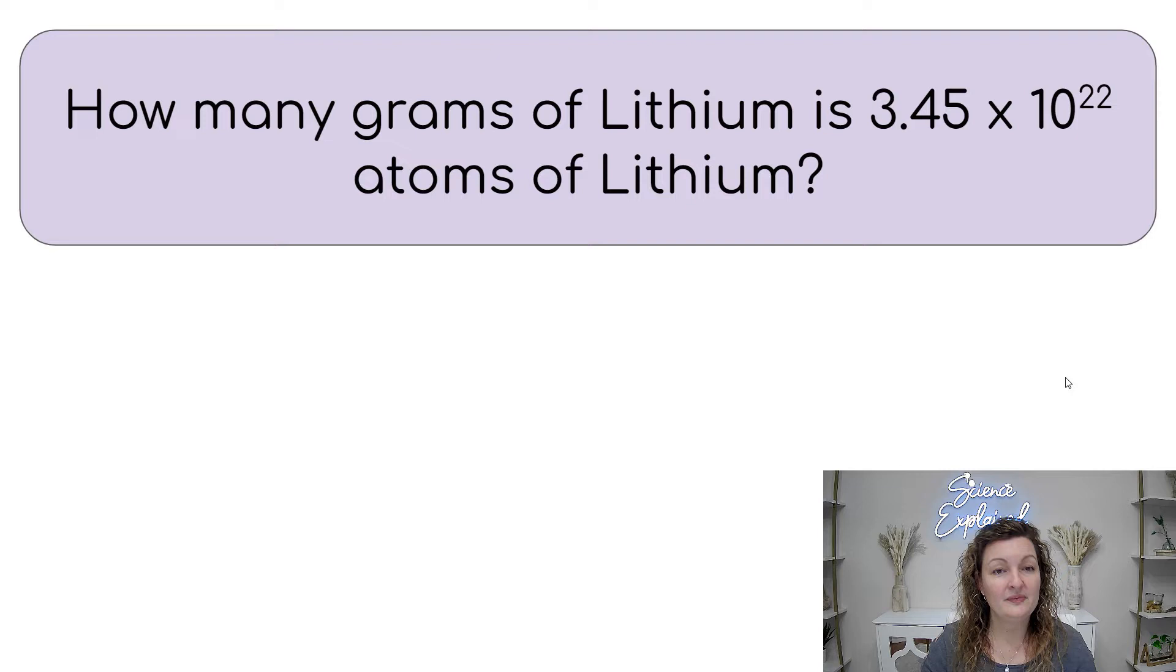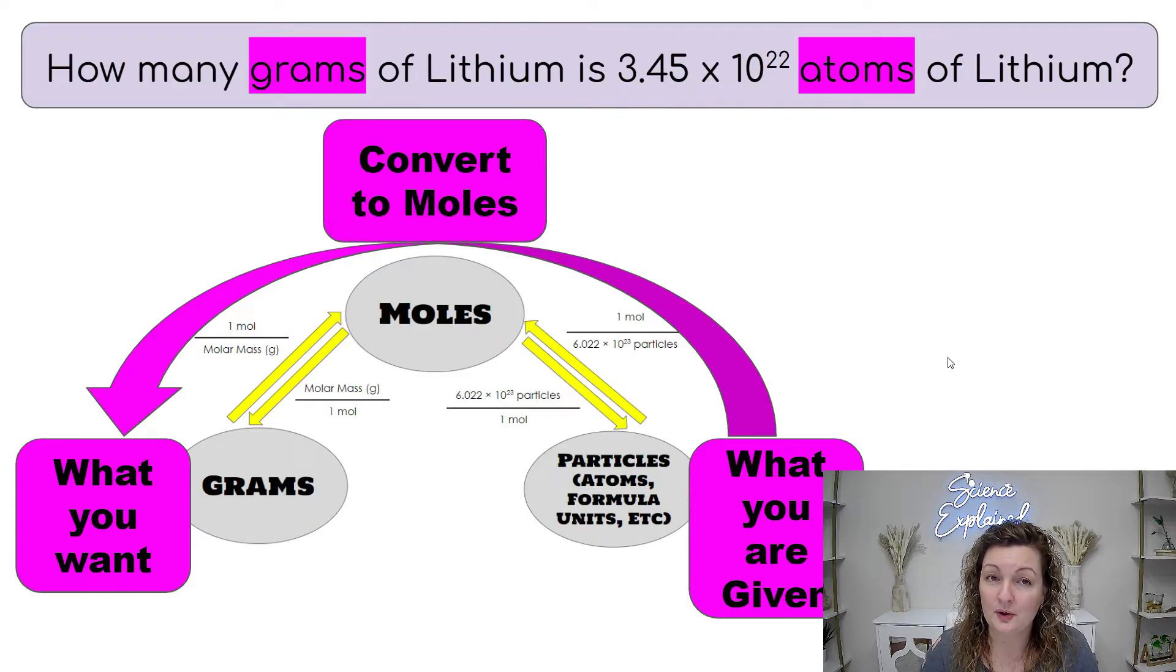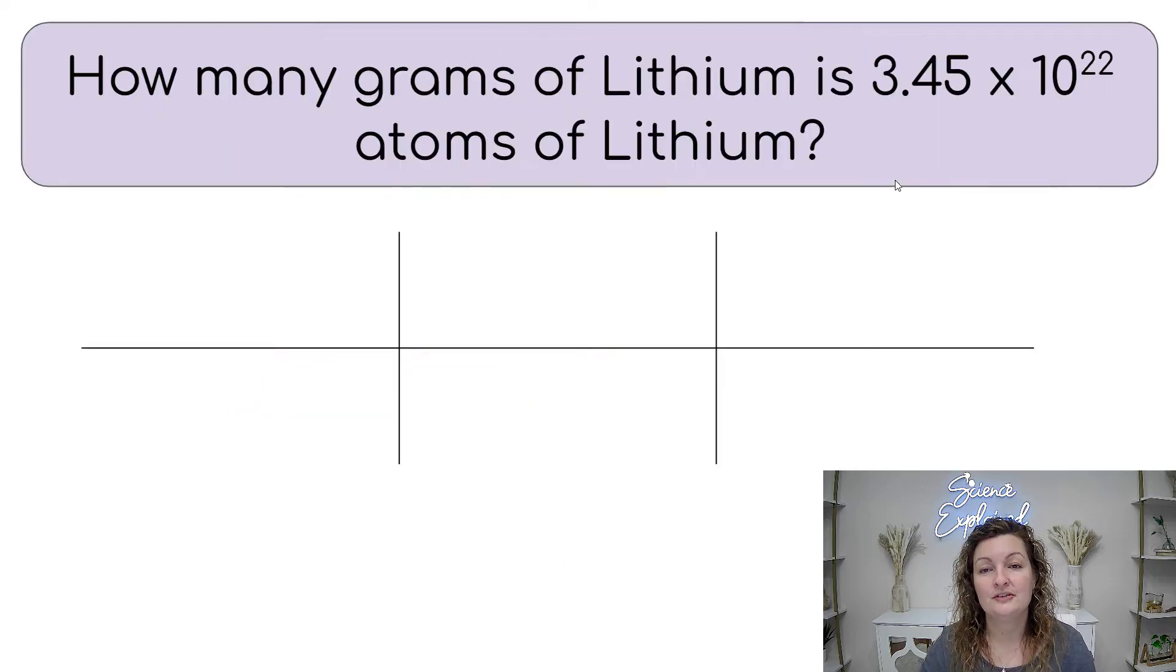So let's go ahead and try one. How many grams of lithium is 3.45 × 10^22 atoms of lithium? So let's go ahead and look at our road map really quick. So we're looking for grams. So that's going to be what we want. But we're starting with atoms. So we're starting over here, which an atom is a particle. So we're going to start with particles. We have to go through moles, convert to moles first, and then go to grams last. So let's go ahead and set up our bridge.